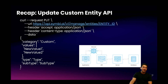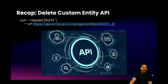With all REST APIs that have a CRUD interface, you have the ability to update your custom entities. This is done by specifying the entity ID in the URL and then being able to change the type, subtype, and values for that given entity. And if you have a create, then you need to have a delete — so there's a delete API where you specify the entity ID to delete and remove the entity from being recognized.